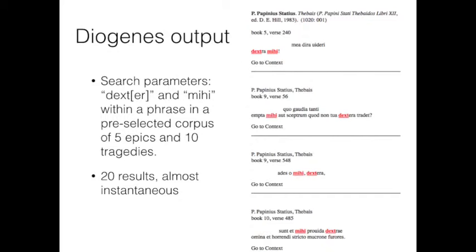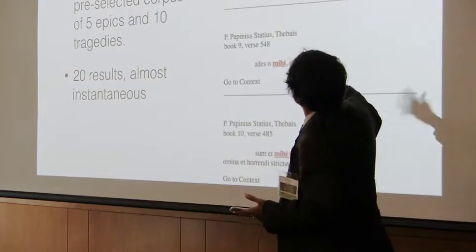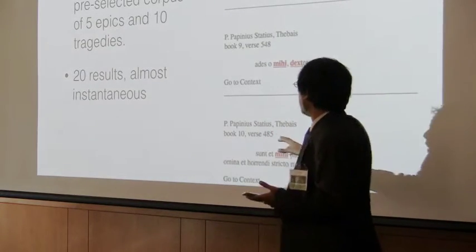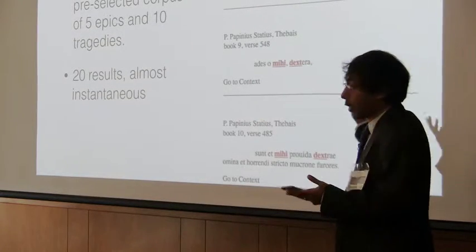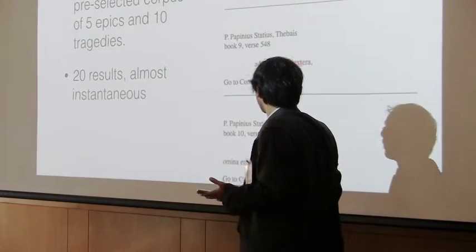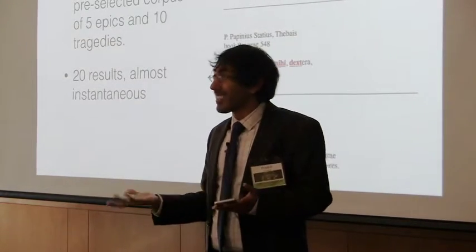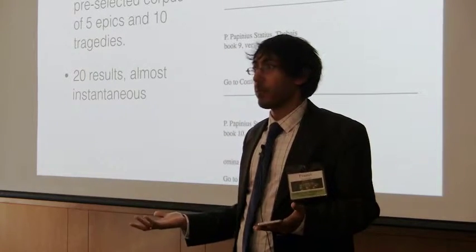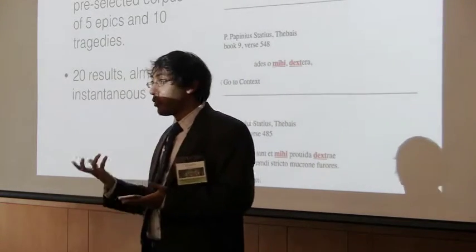There were 20 results. And you can immediately see here the result that we were interested in from book nine. And you can see that it captures both forms. So it's a really great tool. You can just click on the context and get access to the passage from which the verse appears. It gives you very clearly the line reference. And because it's based on these databases of high quality text, that's kind of a big deal in classics. Our texts aren't all of the same quality.